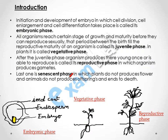Now we will discuss the introduction. All organisms have a life cycle with different phases. For example, if we take humans, the human is first a child, then an adult, and then after a certain age, the human becomes old and dies.